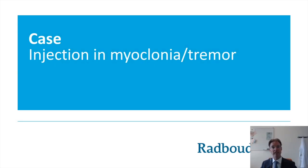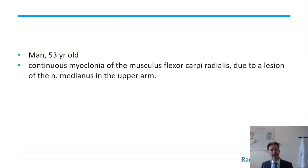The first case I would like to present is a case where ultrasound can really be helpful in identifying active muscles in myoclonia or tremor, and also how to inject these muscles. It's a man, 53 years of age, who presented with continuous myoclonia of the wrist and hands due to a lesion of the medial nerve of the upper arm. Clinically, due to flexion of the wrist, it was suspected that activity occurred in the flexor carpi radialis. Ultrasound can be helpful to visualize this activity.